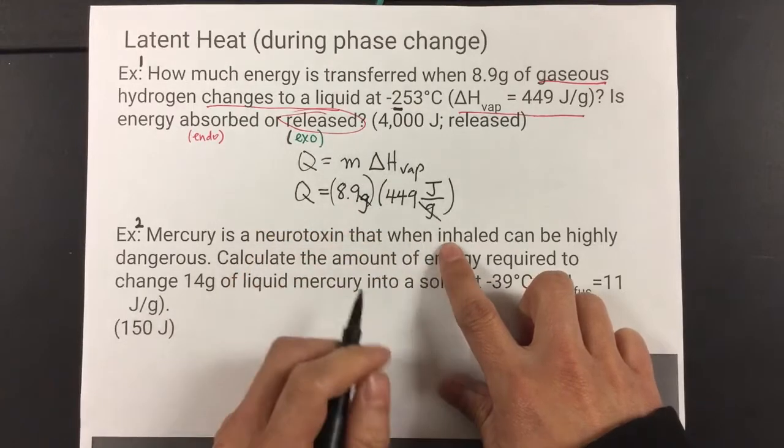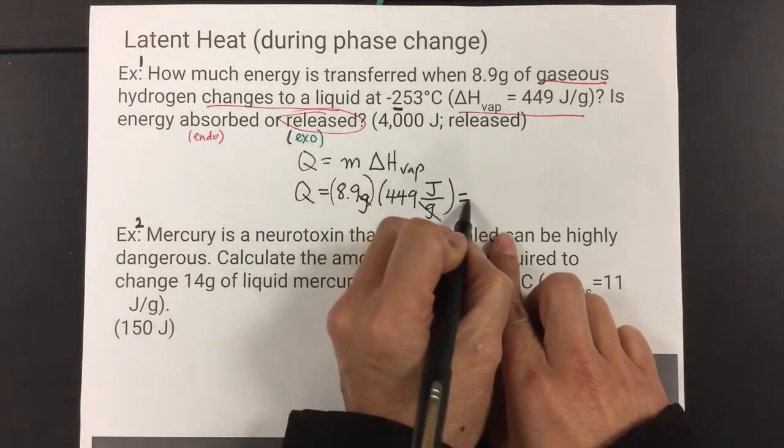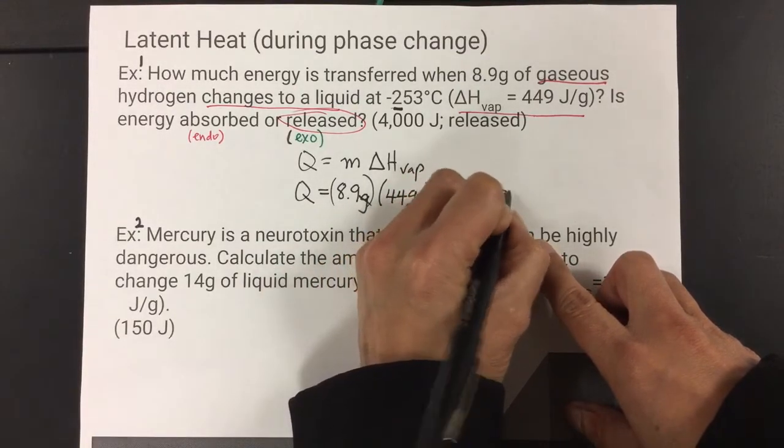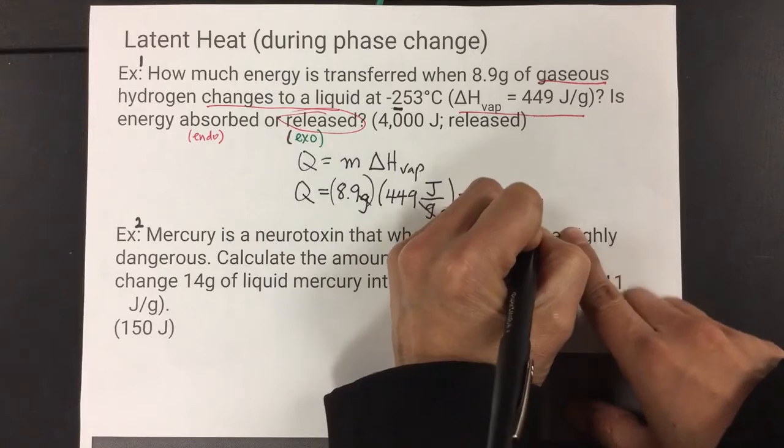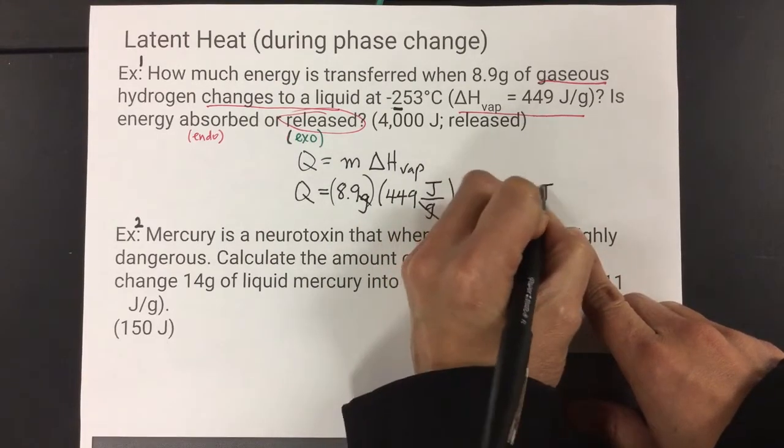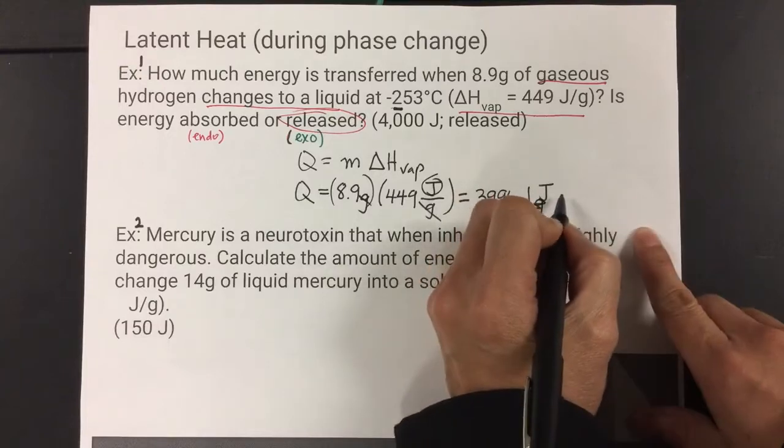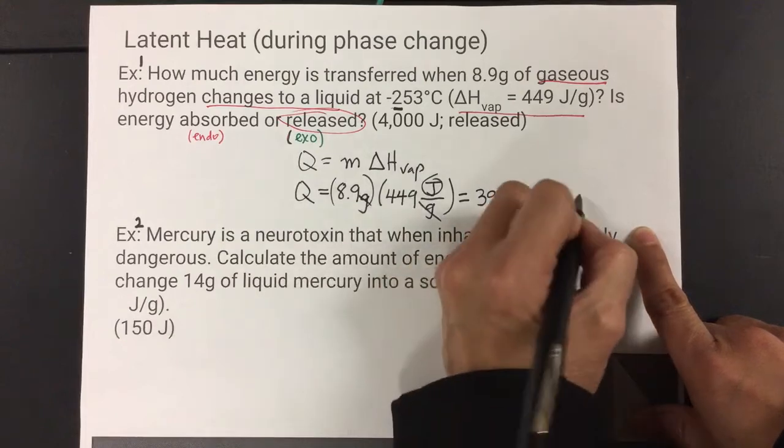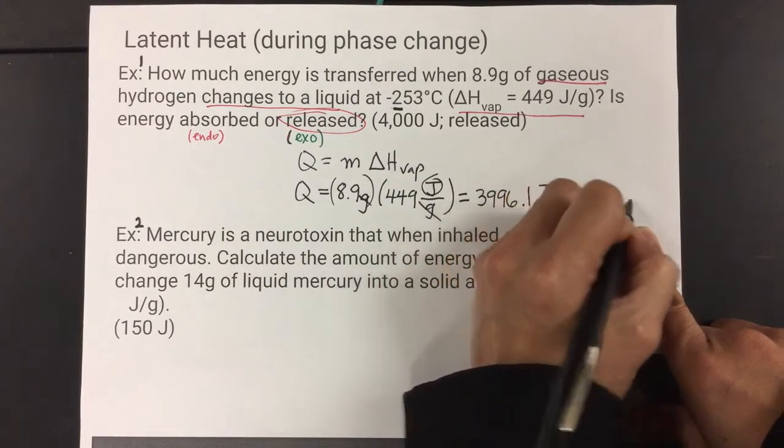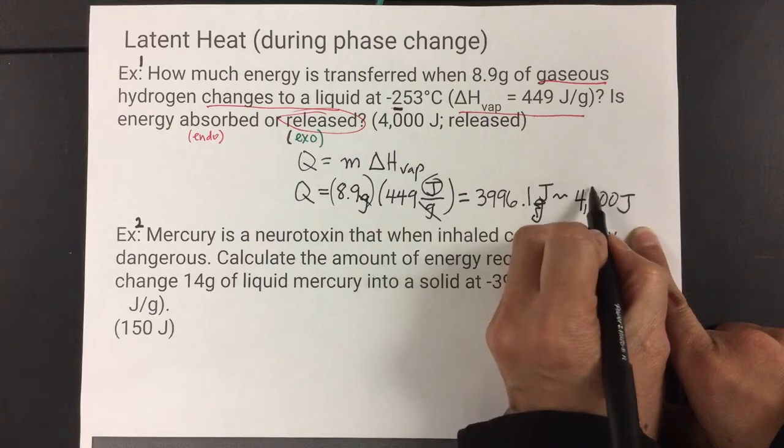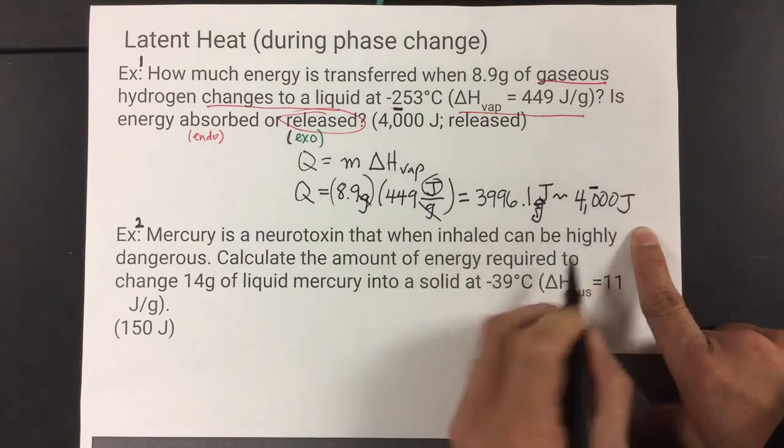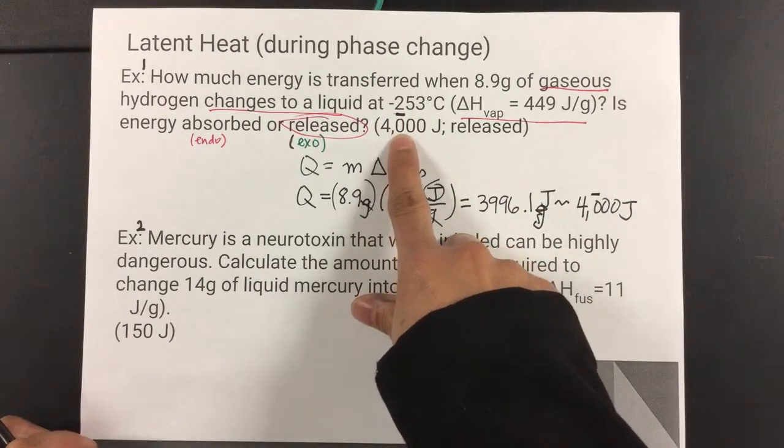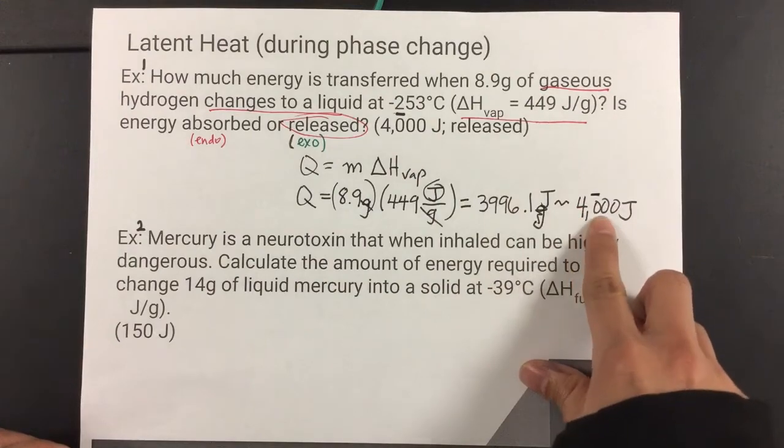Multiplying these two values, notice grams cancel those out, you get 3,996.1 joules. If you look at the unit, joules ends up being the last unit. And then we're going to approximate that to the sig figs, which is two sig figs to 4,000. Now, to account for this two sig figs, you're going to put for the second sig fig where there's a zero, to end it, we put a line above it. And that's why you see a line above my second, the first zero here to show for two sig figs.